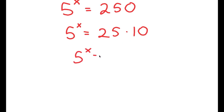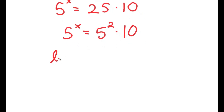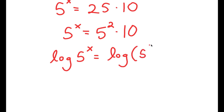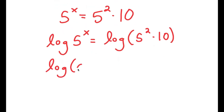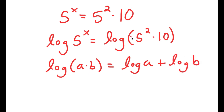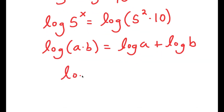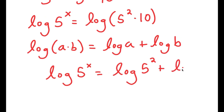The reason I did this is because 25 is the same thing as 5 squared, so I get 5 squared times 10. Now I'm going to take the log on both sides, so I get log of 5 to the power of x is equal to log of 5 squared times 10. And this is the same thing as log of a times b is equal to log of a plus log b.